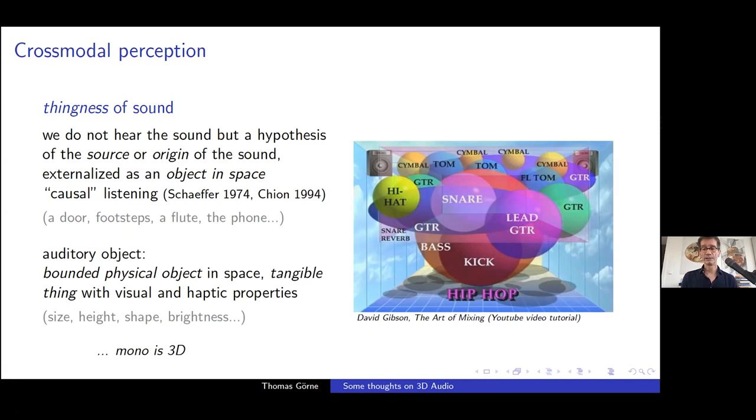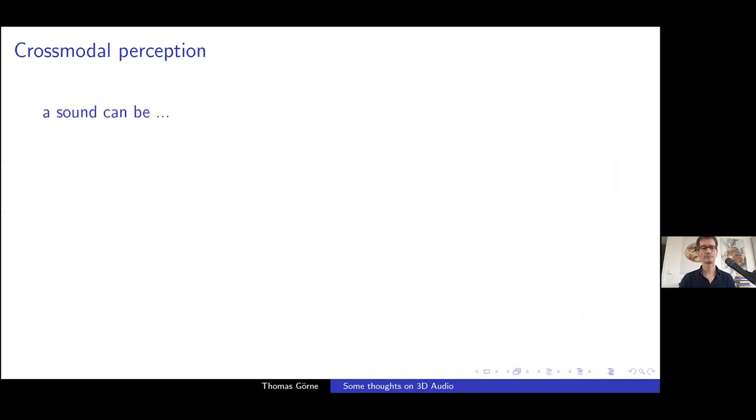And the auditory object is perceived as a bounded physical object in space, a tangible and bounded physical object in space. And this boundedness is maybe the most specific thing about how we perceive sound because the sound field itself is by no means bounded. It's like pervading the whole space. But we can actually hear the size of when, for example, when we're mixing hip-hop, then we can hear the size of the guitar and the cymbal. So, and these things, these auditory objects, then have visual and haptic properties like a specific size, a height in space, a specific shape, and brightness, among others. Which, by the way, leads to the beautiful conclusion that mono is 3D because when I'm setting up one loudspeaker and playing back one sound, then I am actually perceiving an object in space, which is 3D. So, I'm perceiving 3D. The 3D audio systems, the more complicated, complex 3D audio playback systems or production systems, then simply allow me to position this auditory object wherever I want.